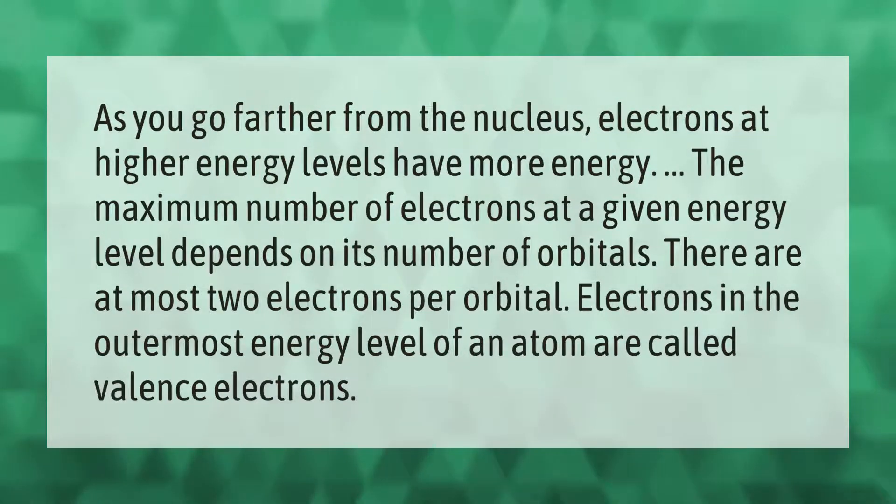As you go farther from the nucleus, electrons at higher energy levels have more energy. The maximum number of electrons at a given energy level depends on its number of orbitals. There are at most two electrons per orbital. Electrons in the outermost energy level of an atom are called valence electrons.